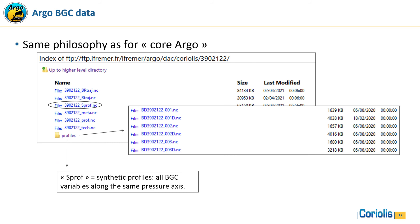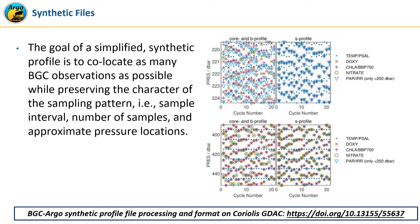The philosophy for BGC data is the same as for core Argo, except that two additional files are made available: the B files, which contain all the information acquired by the BGC sensors including biological variables, and the SPROF synthetic profile files that contain all BGC variables along the same pressure axis. This synthetic file has been designed to facilitate the use of BGC data. The goal of the synthetic profile is to co-locate as many BGC observations as possible while preserving the character of the sampling pattern — for example, sample interval, number of samples, and approximate pressure location.